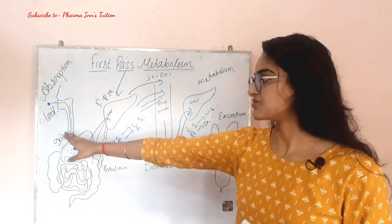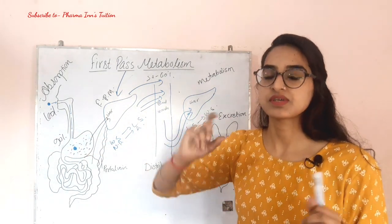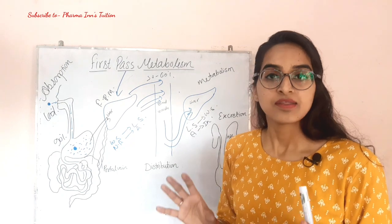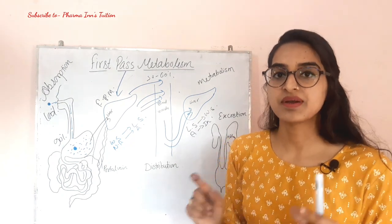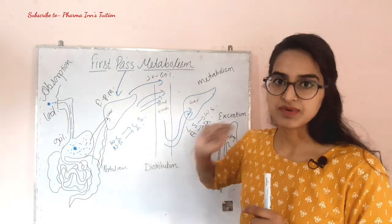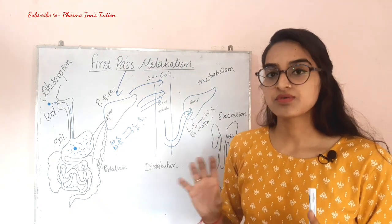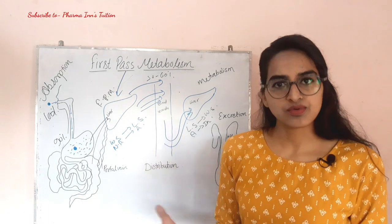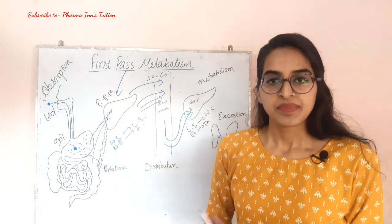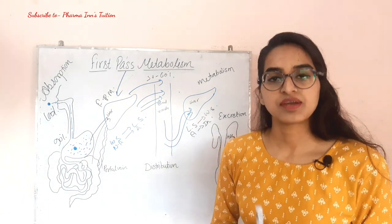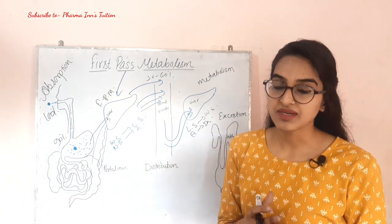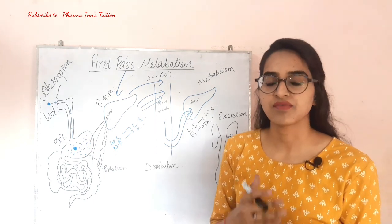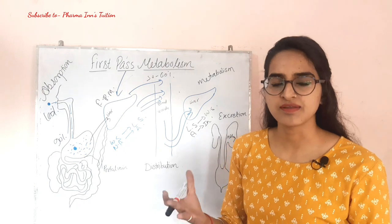So out of 100% drug given, only 50–60% reaches the blood, meaning bioavailability is 50–60%. To increase this bioavailability, we give drugs via other routes: intramuscular, intravenous, subcutaneous, intradermal, vaginal, rectal, or sublingual.